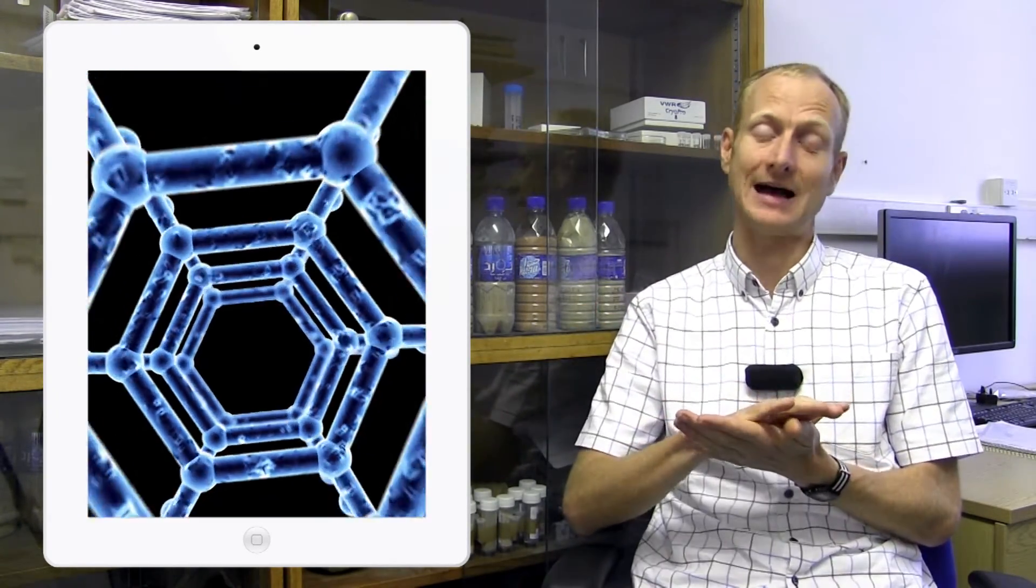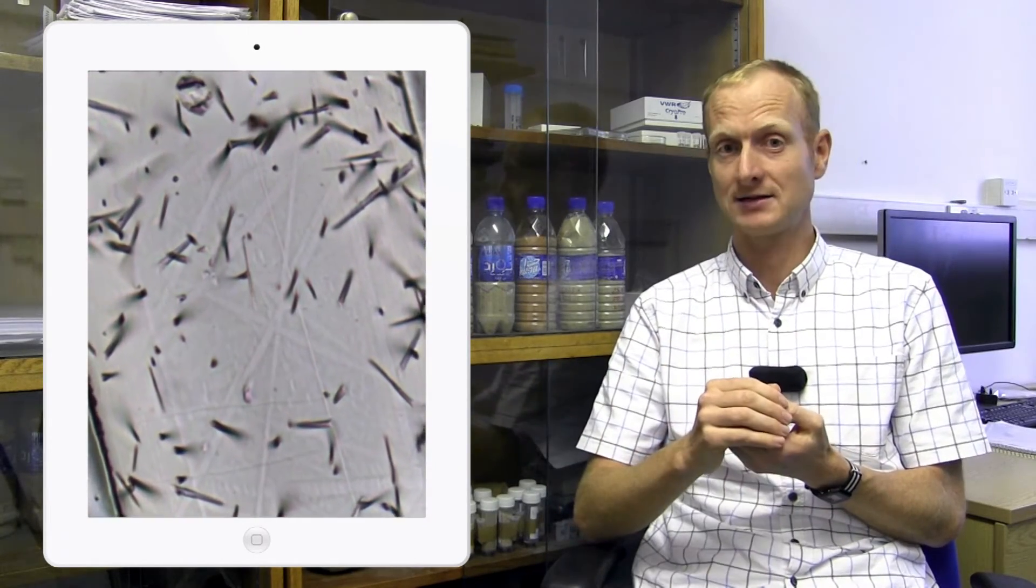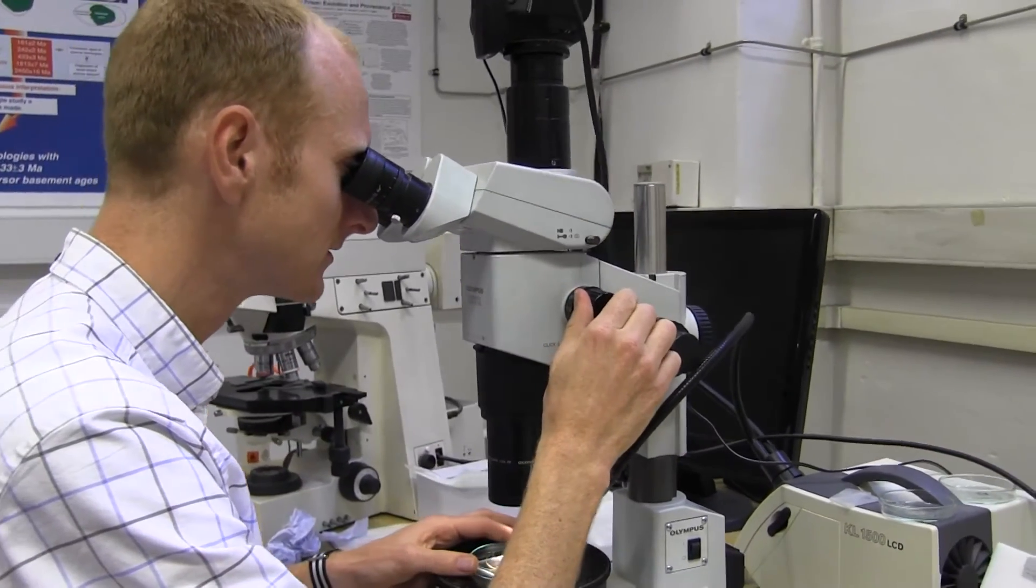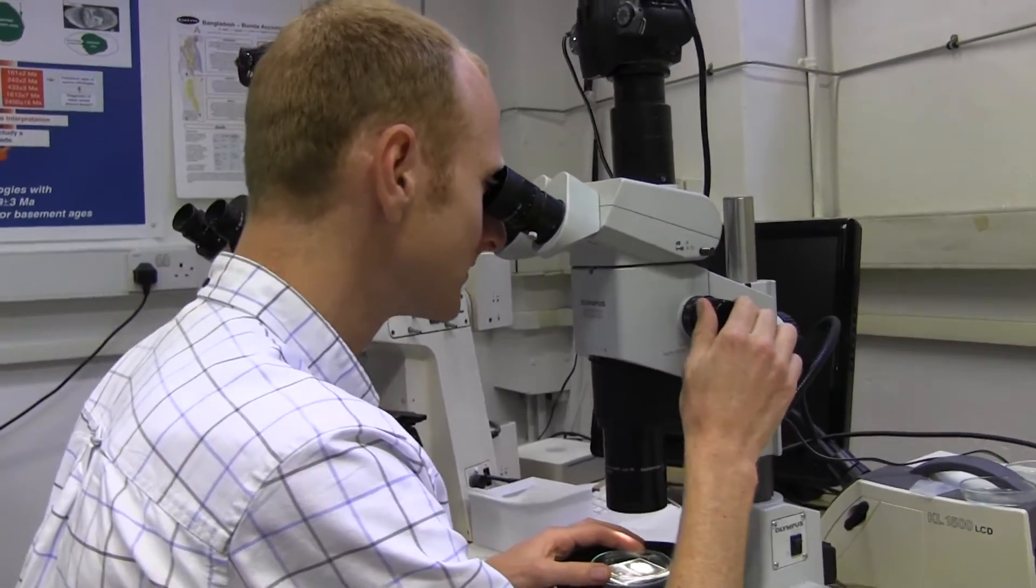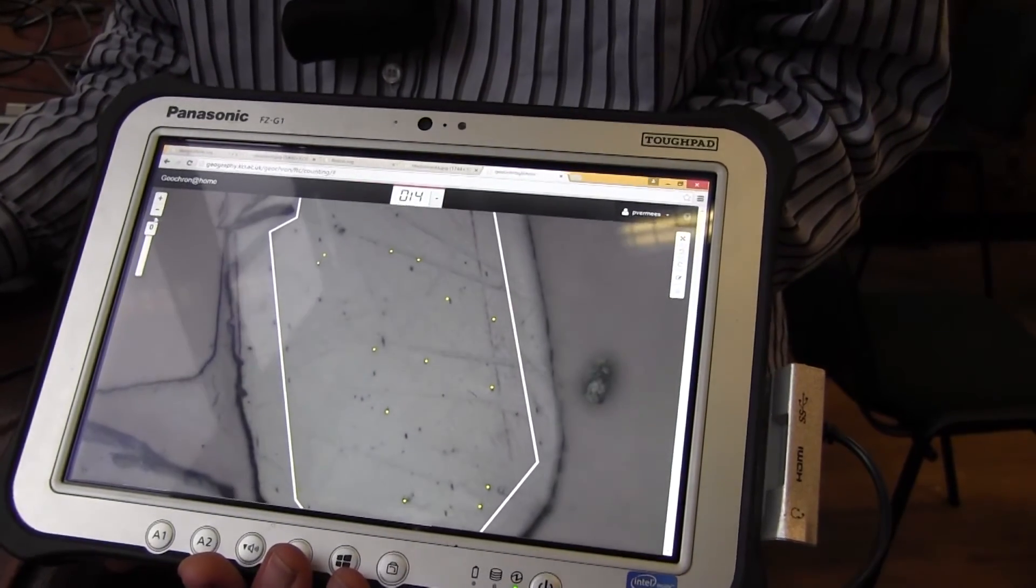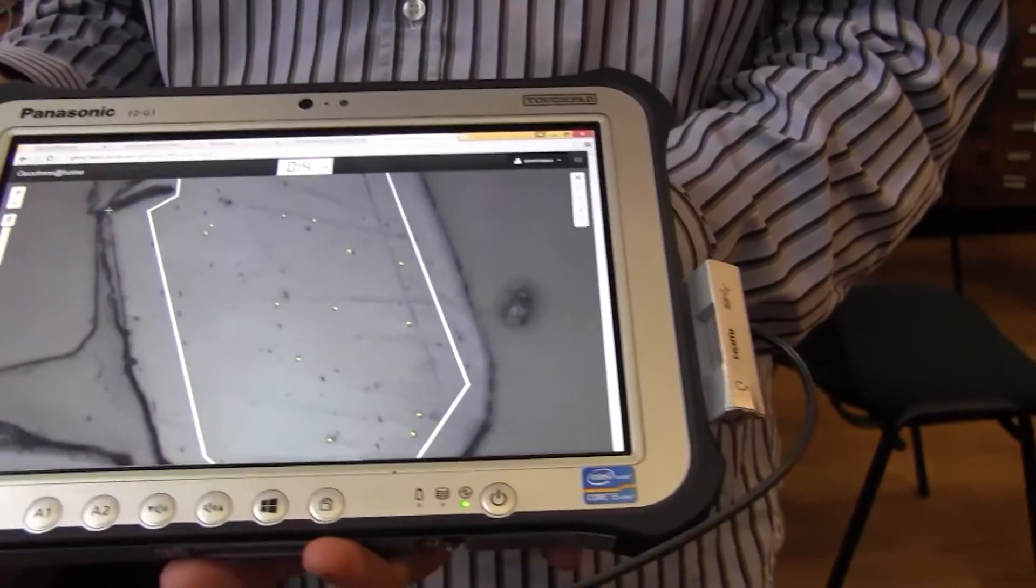We can reveal these damaged tracks, these fission tracks, by etching the crystal with acid, and then we can count the tracks, not using a mass spectrometer but using a microscope. Or you could alternatively use a computer, because together with my colleague Jan-Ping Hu from King's College, I've developed an app called Geochron at Home, which you can use to count fission tracks from the comfort of your own home or on the train using your smartphone or a tablet computer.